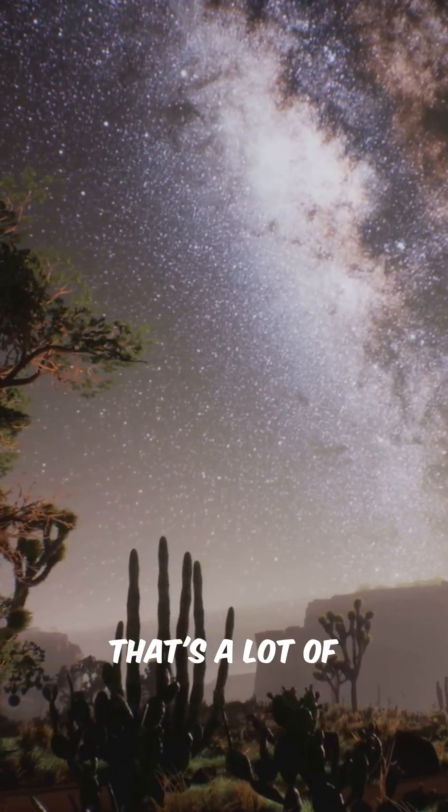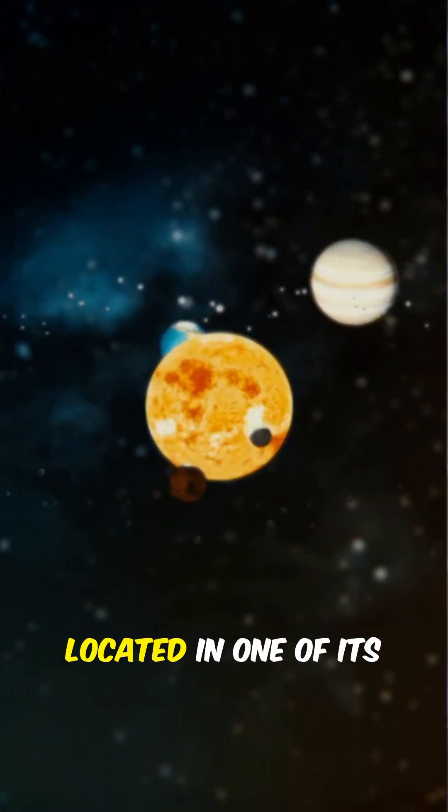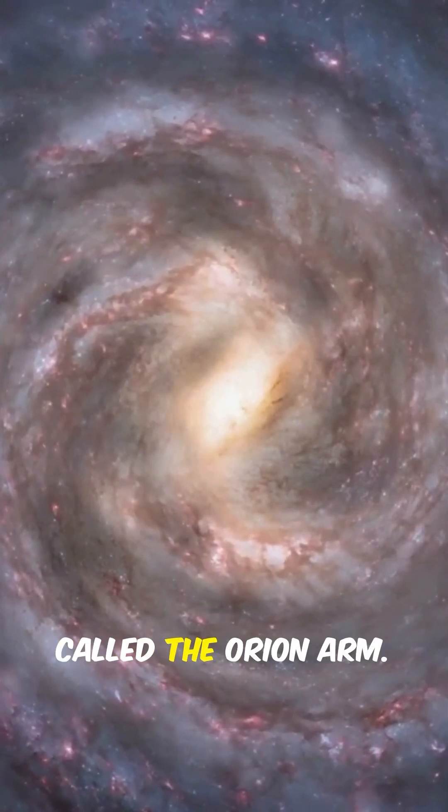It's home to over 200 billion stars. That's a lot of starry nights. Our solar system is located in one of its spiral arms called the Orion Arm.